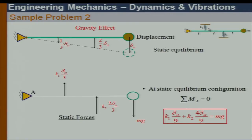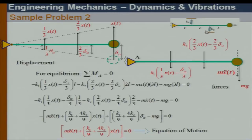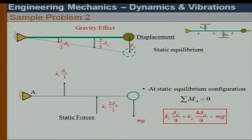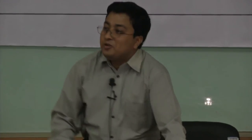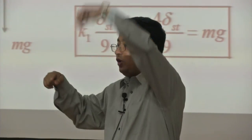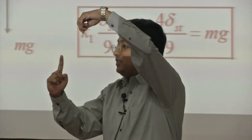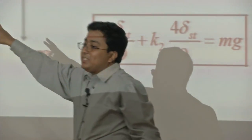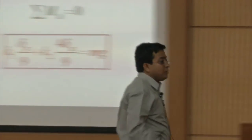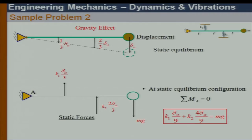In the free body diagram they are in the same direction. We have gravity mg, and taking moment about point A gives the static equation, from which we can get the static displacement.